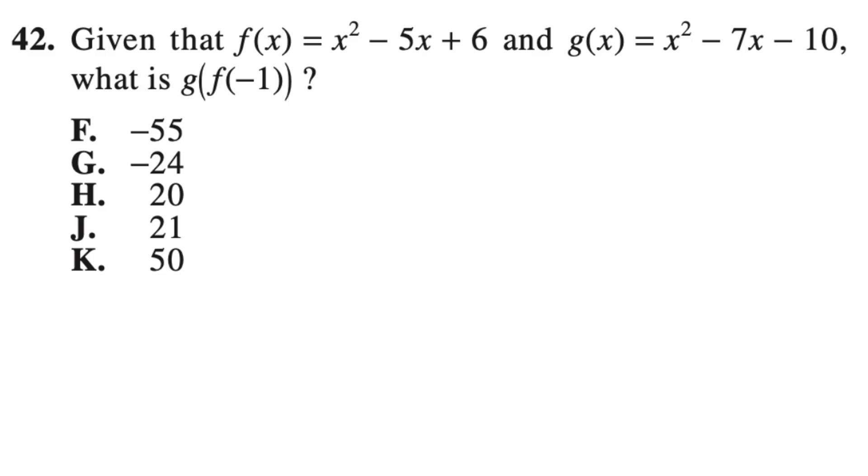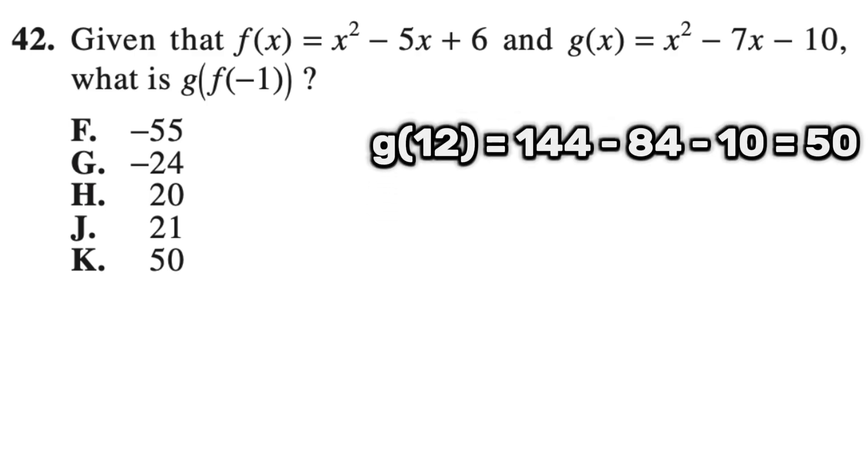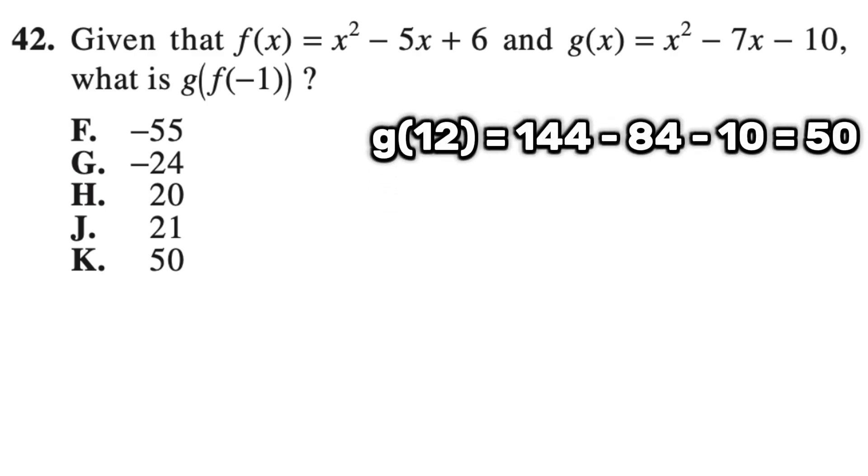So if we plug negative 1 into function f, that would be 1 plus 5 plus 6, which is 12. Now we plug 12 into the function g to get 144 minus 84 minus 10, which is 50 or k.